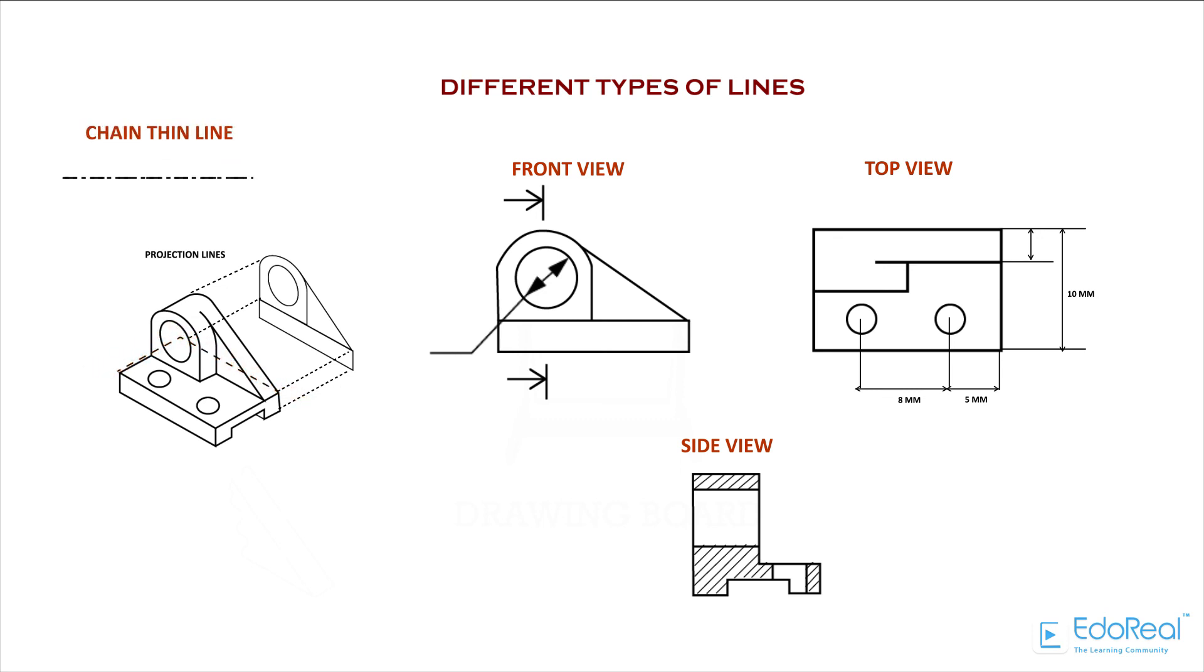Chain Thin Line. This line is used to represent central lines for circles and arcs.